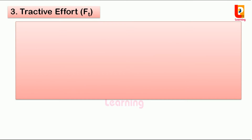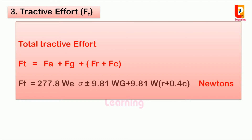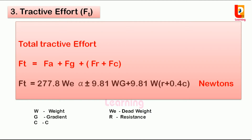Therefore, total tractive effort equals acceleration effort plus gravitational pull effort plus train resistance effort plus tractive effort required to overcome curve resistance. The formula is: total tractive effort = 277.8 × We × alpha ± 9.81 × W × g + 9.81 × W × r + 0.4 × c, in Newtons. Where W is the weight of the train, We is the dead weight of the train when at rest, g is the gradient, r is the resistance, and c is the curve resistance.